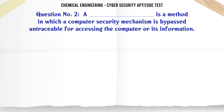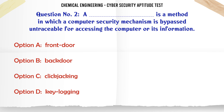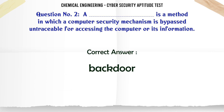Is a method in which a computer security mechanism is bypassed untraceable for accessing the computer or its information. A. Front Door. B. Backdoor. C. Clickjacking. D. Keylogging. The correct answer is Backdoor.